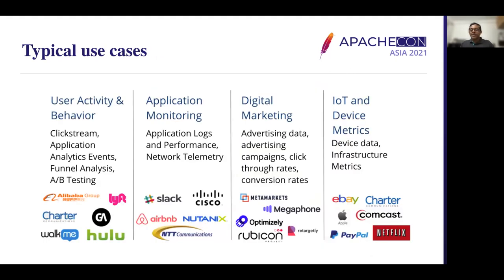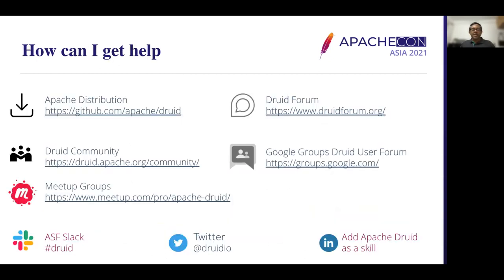These are some typical use cases where data volume is huge and real-time analysis is needed, though Druid is not limited to these particular use cases. For getting help, there are Druid forums, an active Apache Druid community where you can subscribe to mailing lists, Google Groups for Druid, meetup groups, and an ASF Slack channel for Druid. If you are already working with Druid technology, please add your skillset to LinkedIn.